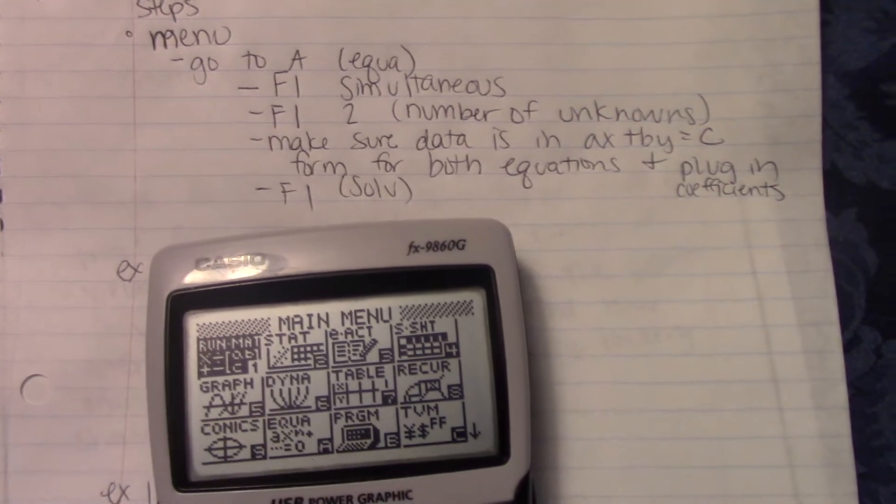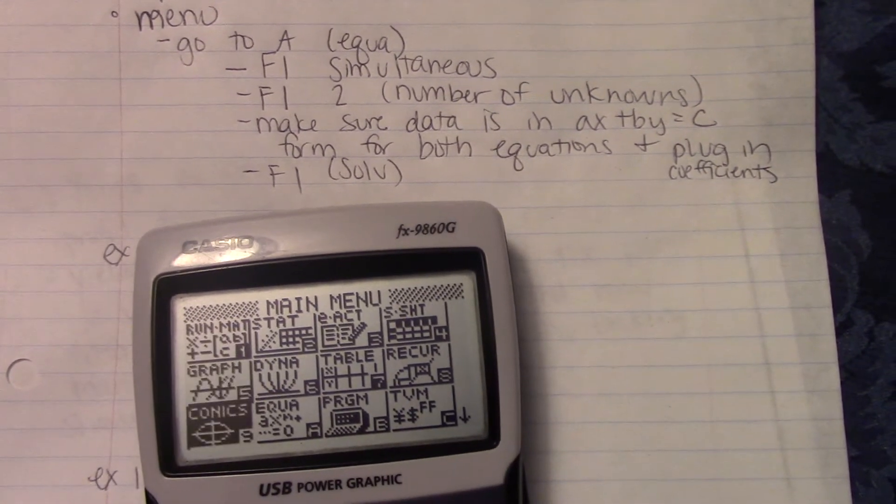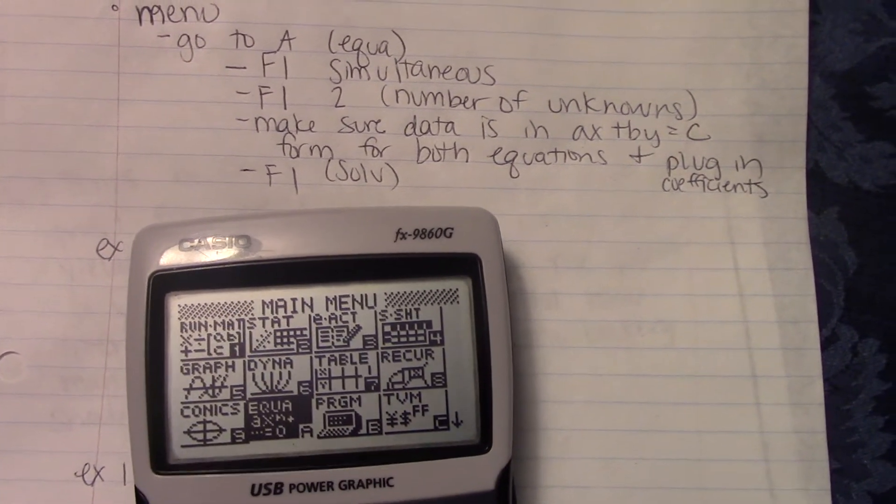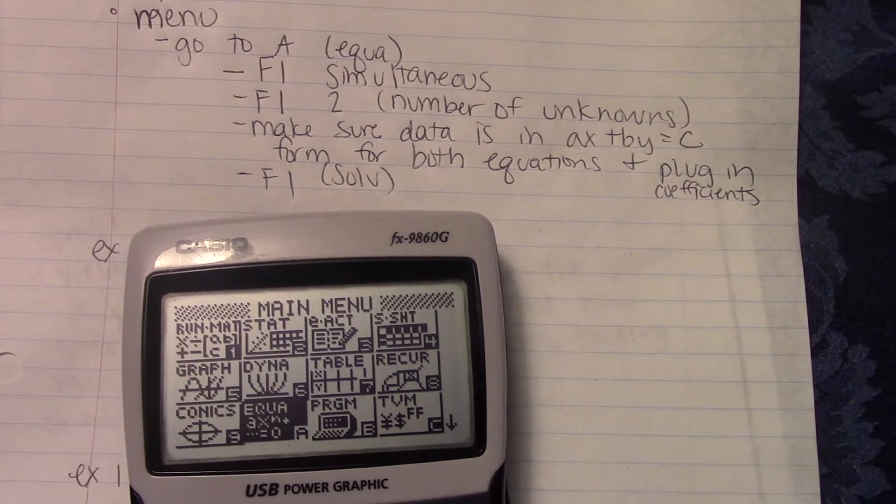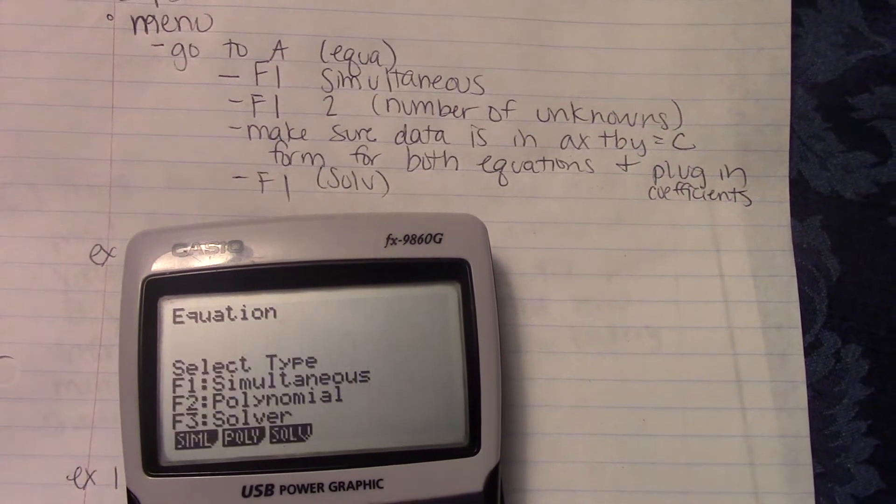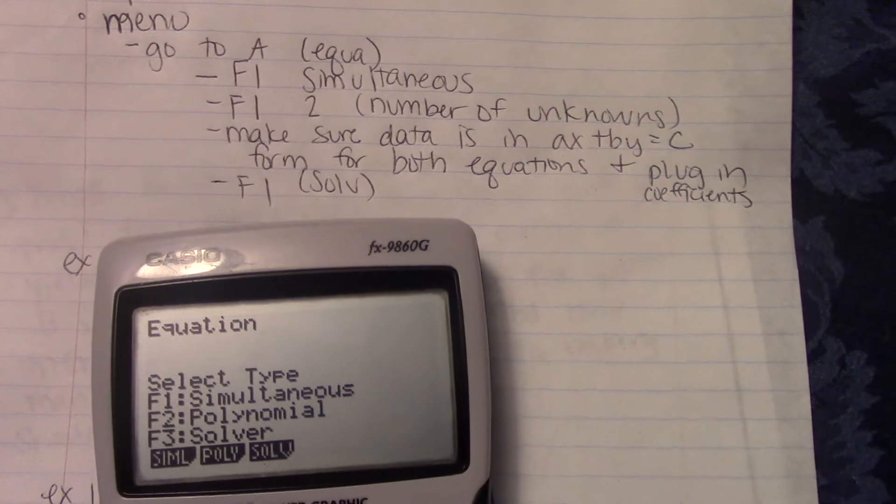You need to go to A. Sometimes I type the number, sometimes I just scroll over. Scroll over to A, the equations. Hit your execute button, the blue button. Then you need to hit F1, simultaneous.